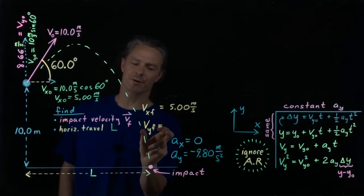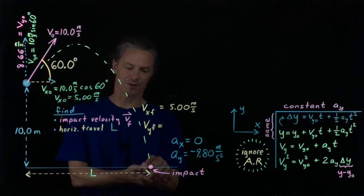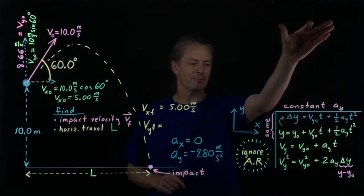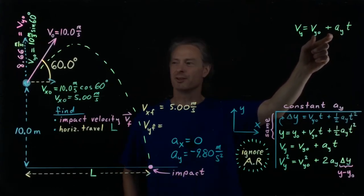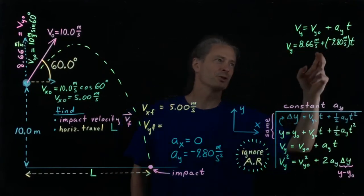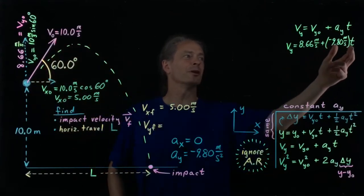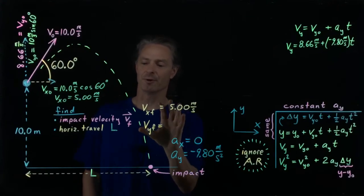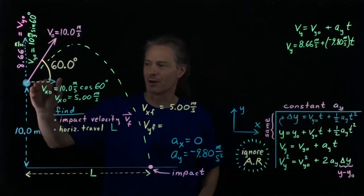Now we need to find the y component of the final velocity — that is, the y component of the velocity at the time the ball reaches the ground. Let's use the y velocity equation: v sub y equals v sub y zero plus a sub y times t. We know a sub y is negative 9.8 m/s², and v sub y zero is 8.66 m/s. But we can't go further yet because we don't know the time it takes for the ball to travel from here to impact. So let's set this aside and figure out that time.